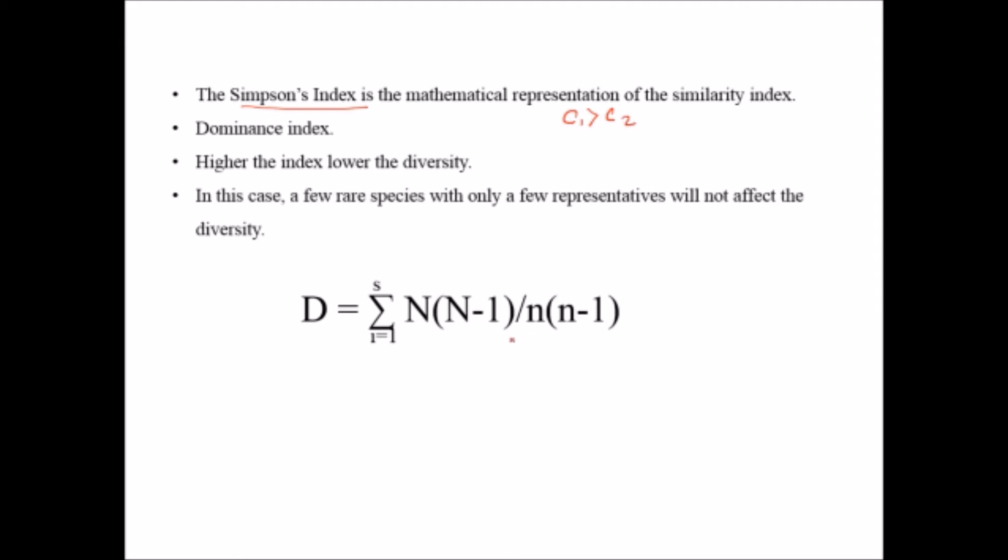If we want to calculate the Simpson's index or the similarity then we will simply use one minus D. To calculate the Simpson index we use the formula one minus D. So let's see the example.